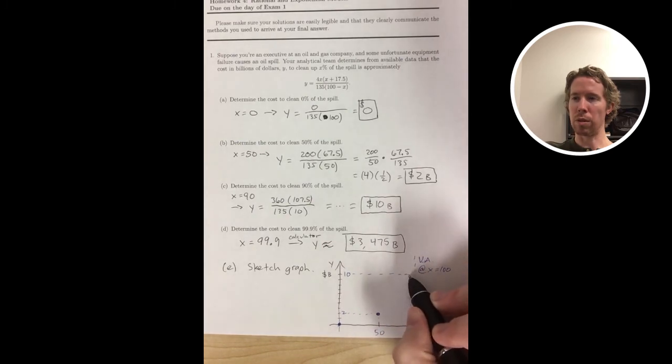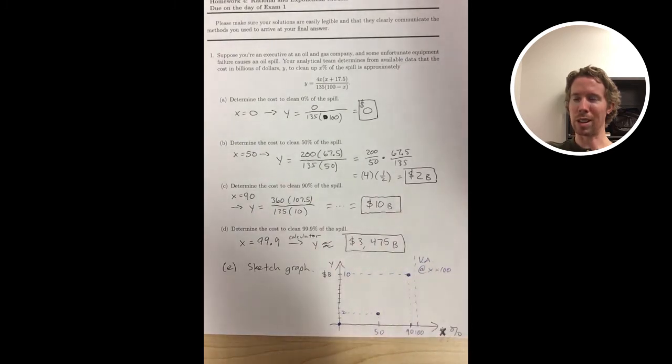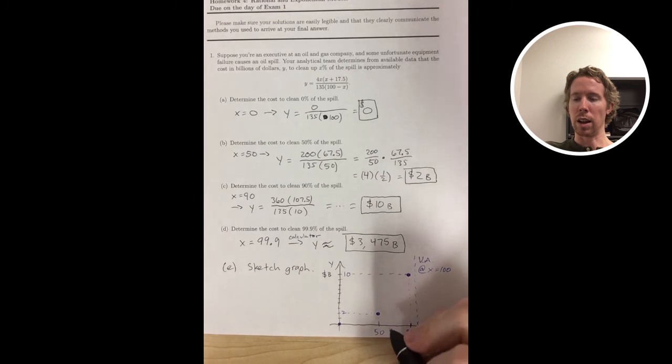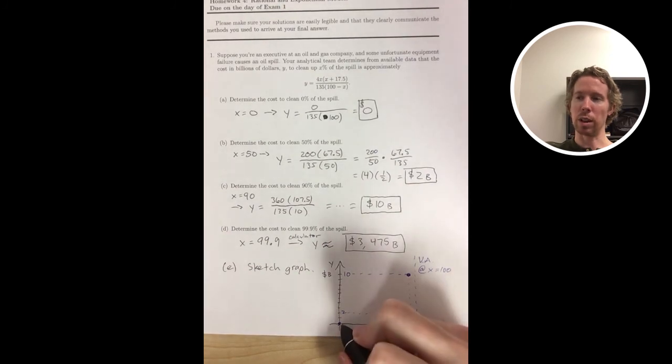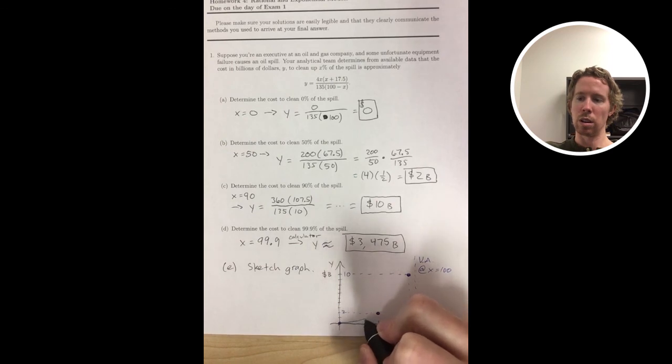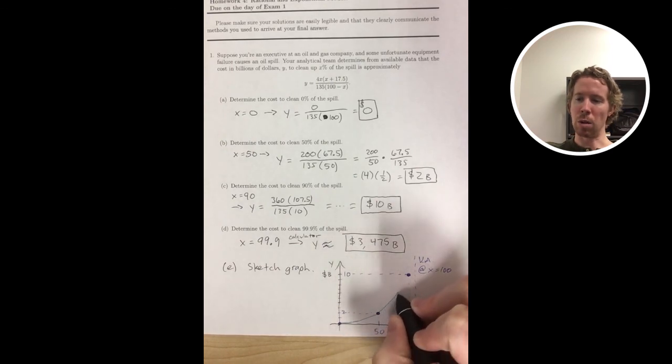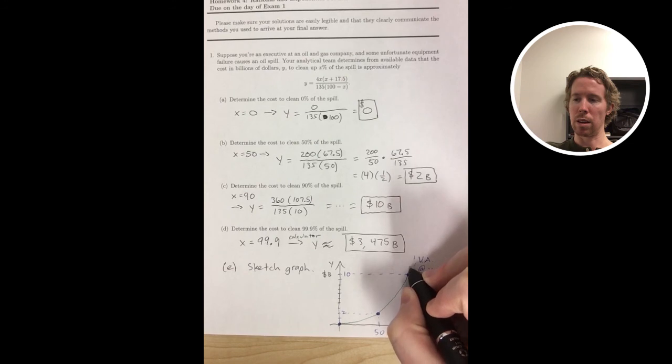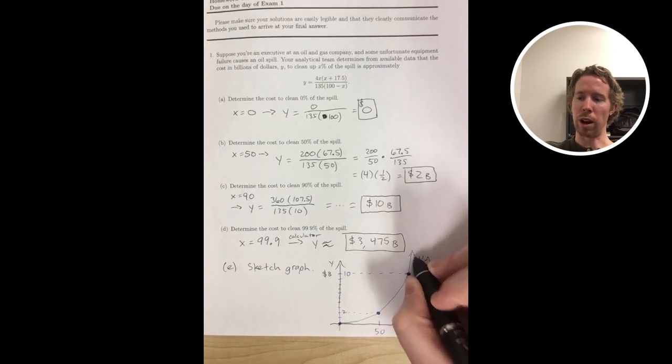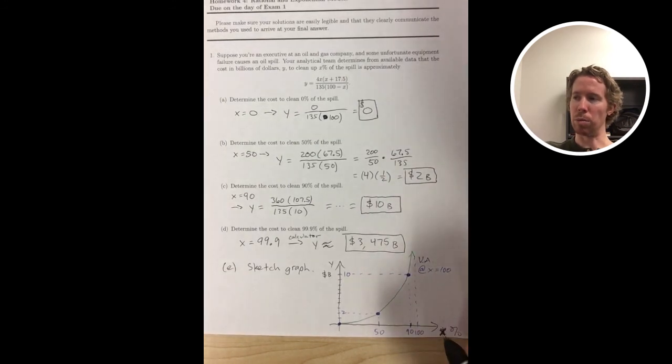I know my smooth curve starts at zero zero, it has to hit those points, and then it has to keep going up as I get closer to a hundred so it just shoots almost straight up from there. Remember at 99.9 it would have to hit 3.4 trillion.